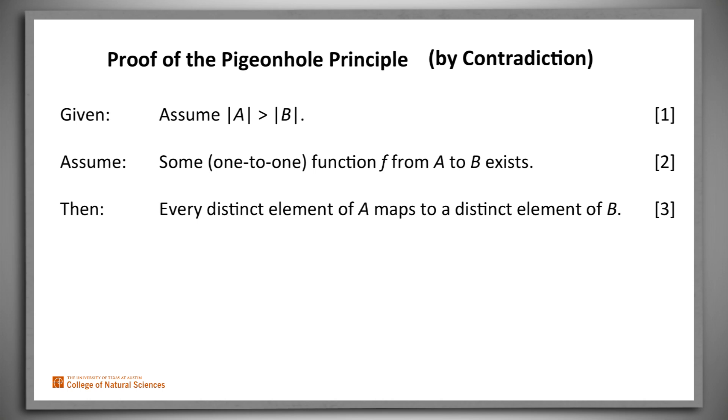Since that function maps each distinct element of A to a distinct element of B, there must be no more elements in A than there are in B. But there are. There is now a contradiction with assumption one. So our second assumption that a one-to-one function from A to B exists must be false.